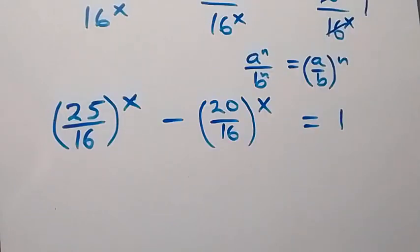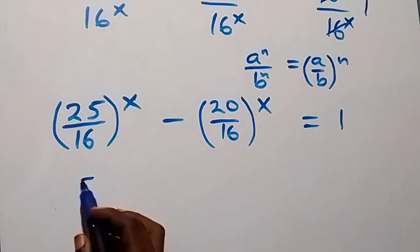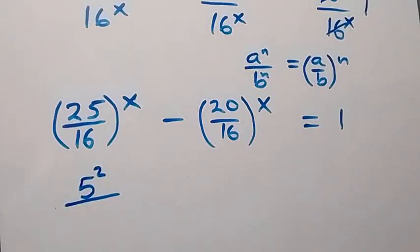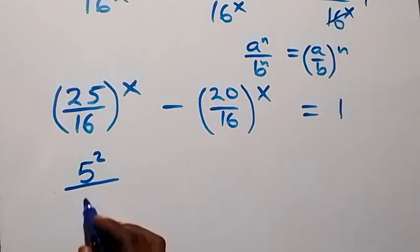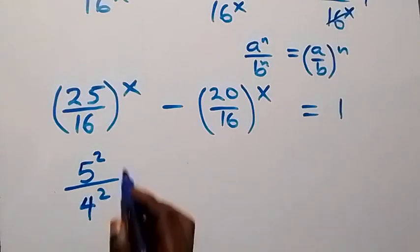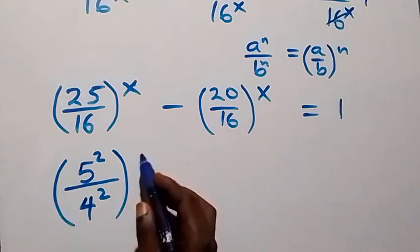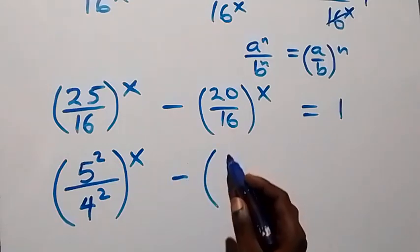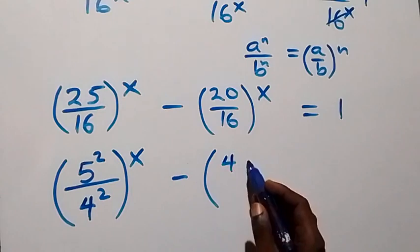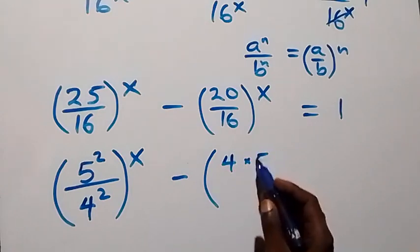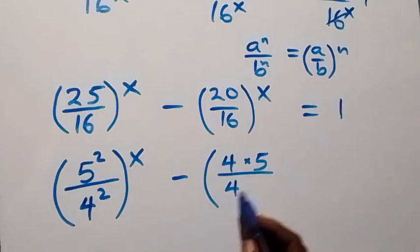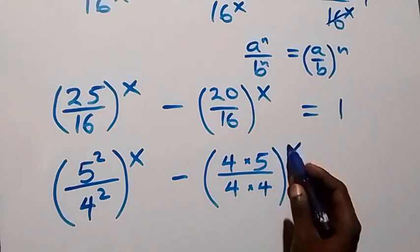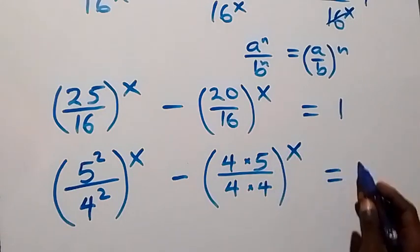Now, 25 is 5 times 5, which is 5 squared, and 16 is 4 times 4, which is 4 squared. Then 20 is 4 times 5, and 16 is 4 times 4. So we have (5²/4²) raised to power x minus (4×5)/(4×4) raised to power x equals 1.